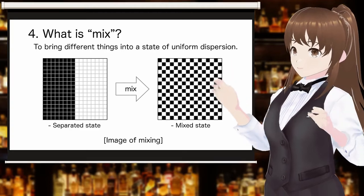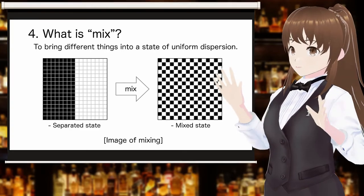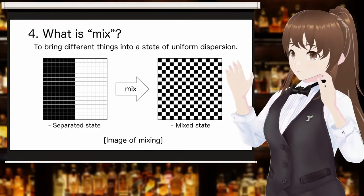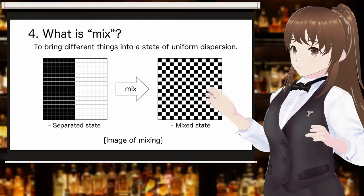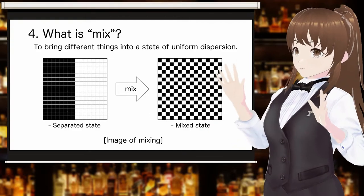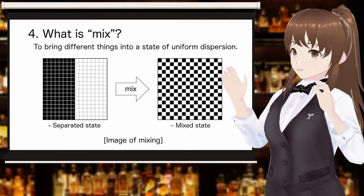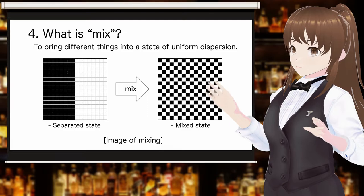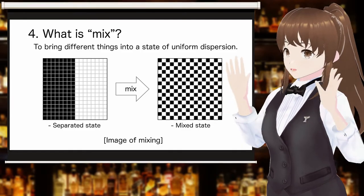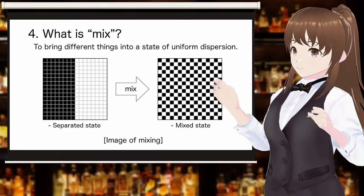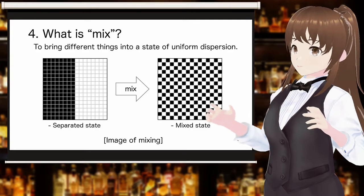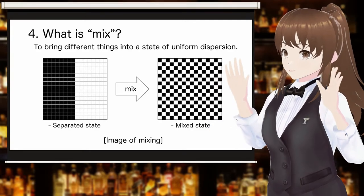To mix is to bring different things into a state of uniform dispersion. The screen shows an image diagram of mix. The left side shows the separated state before mixing, and the right side shows the state of uniform dispersion of different materials after mixing.